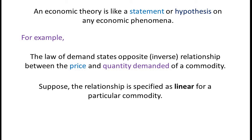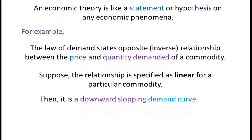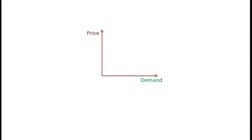Suppose the relationship is specified as linear for a particular commodity, then it is a downward sloping demand curve, and graphically we get DD demand curve which is a downward sloping curve.